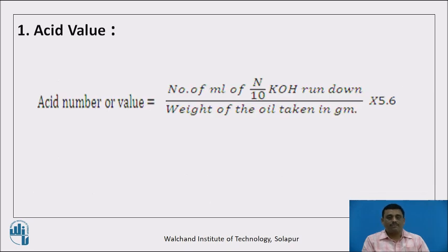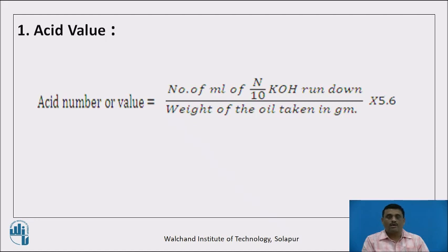The same definition can be represented with a formula. The acid number or acid value is equal to the number of mL of N/10 KOH used for titration to phenolphthalein indicator, divided by the weight of the oil sample taken, multiplied by the standard factor 5.6. Using this formula, one can calculate the level of mineral acids present in a given sample of oil.